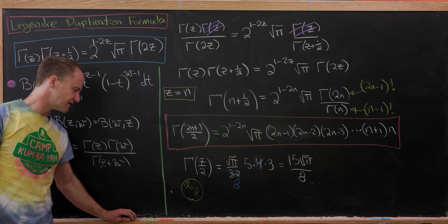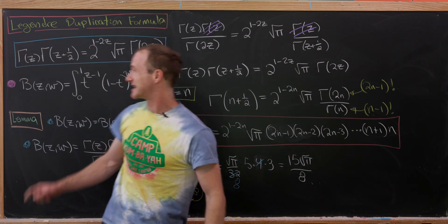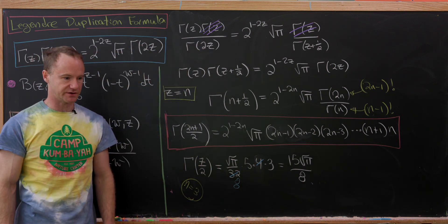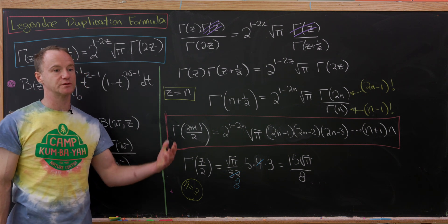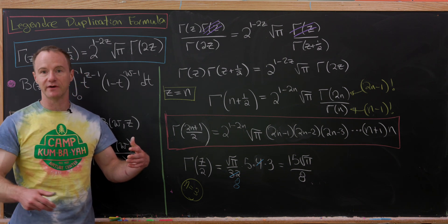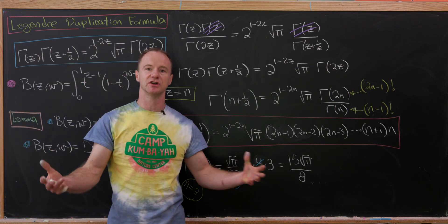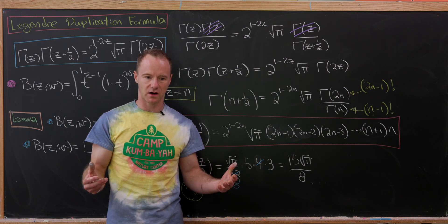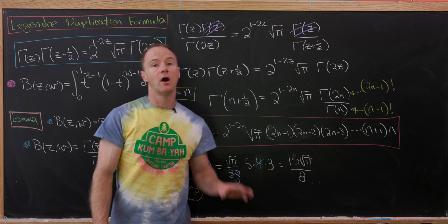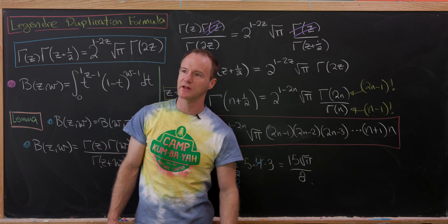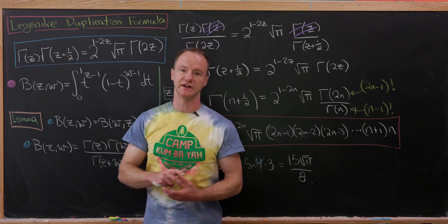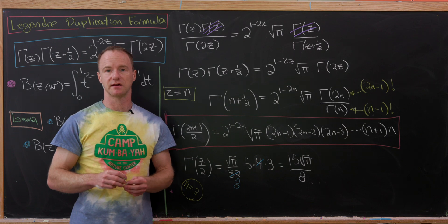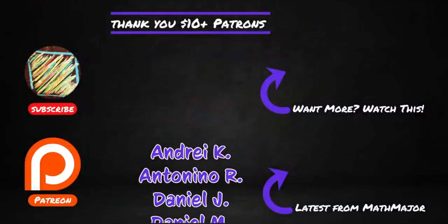There's something special about half-integer values: a number that is 1/2 away from an integer, when added to another such number, yields an integer. This closure property doesn't hold for numbers like integer + 1/3, though there are more complicated analogous formulas for other denominators. Feel free to post in the comments if you'd like to see a video about that.